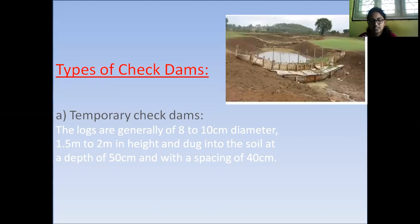Check dams are constructed across streams to arrest soil erosion and harvest the runoff water. However, the height of the check dam is generally less than 2 meters.